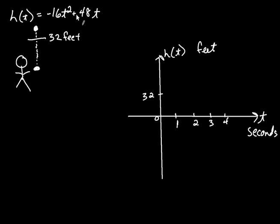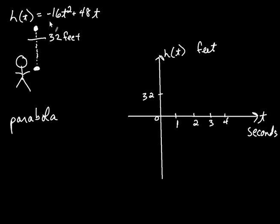This function is quadratic — raised to the second power. Its graph is what we call in mathematics a parabola, which kind of looks like a U. Notice the lead coefficient is negative — that means the parabola opens downwards. We'll see how to graph parabolas a little bit later. This parabola passes through certain key points.